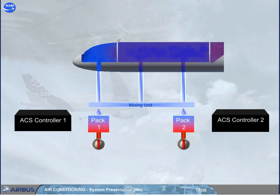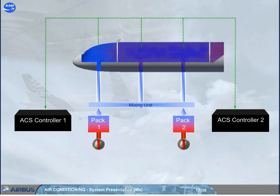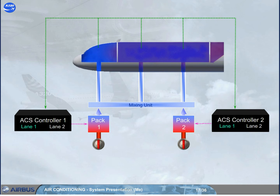The two ACS controllers monitor the temperatures of the three zones and send signals to set the air temperature delivered by the related pack. Each ACS controller comprises two lanes, one active and the other in standby. In case of one lane failure, the second lane takes over. In case of both lanes failing, the related pack is lost.